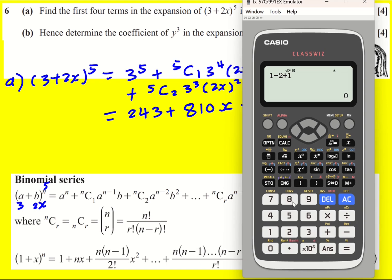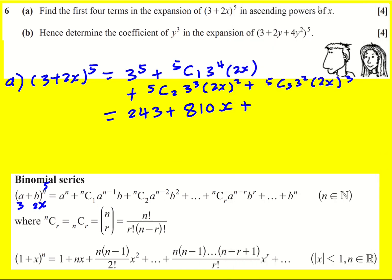The next one is 5C2 times 3^3. I'm going to do this on my calculator to show you. Times by 2 squared - remember to square the 2, very important - it's 1080x^2. And the last one is 720x^3.